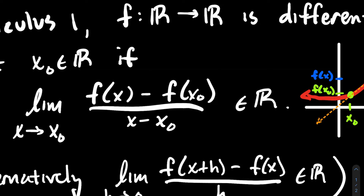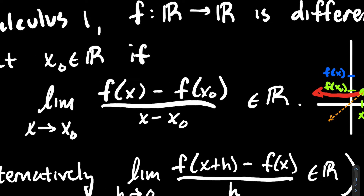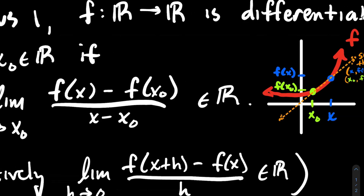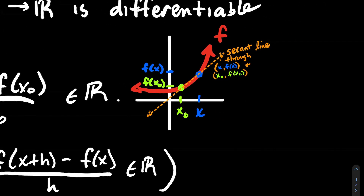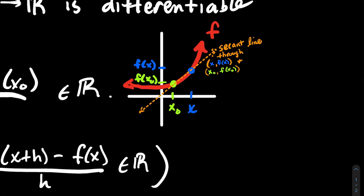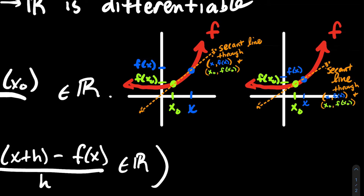Now I'm going to take the limit as x approaches x₀. What you can imagine is: what if I took that blue point and dragged it a little bit closer to the green point? I took the blue point and scooted a little bit closer, and I'm still going to measure the slope of that secant line — that's what the difference quotient does. It measures the slope of that secant line: change in y over change in x.